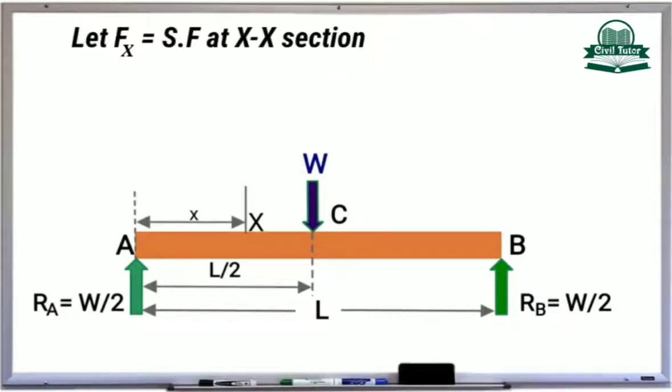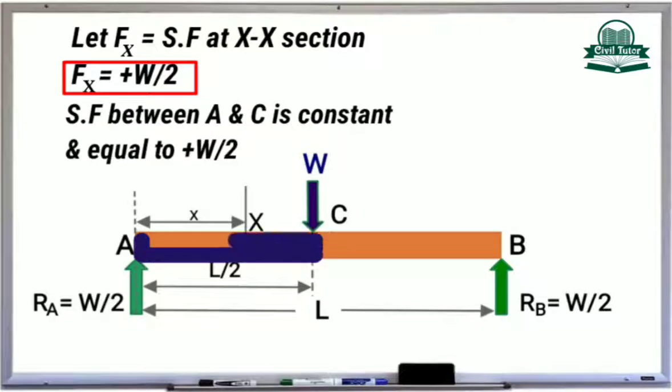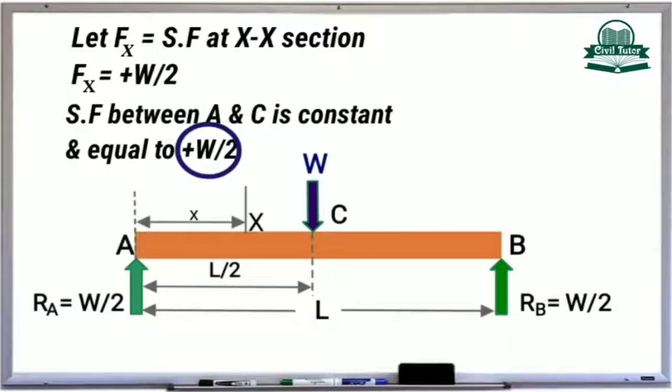Now let FX be the shear force at section XX, and FX will be equal to plus W by 2. The shear force will remain constant between A and C and will be equal to plus W by 2 since there does not exist any extra load between A and C.